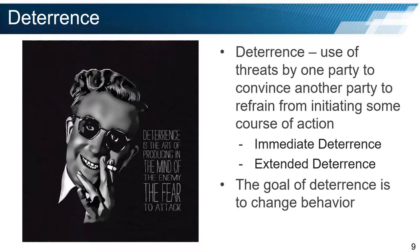A policy of deterrence can fit into two broad categories. One, preventing an armed attack against a state's own territory, known as direct deterrence. Or two, preventing an armed attack against another state, known as extended deterrence. Situations of direct deterrence often occur when there is a territorial dispute between neighboring states in which major powers like the United States do not directly intervene. On the other hand, situations of extended deterrence often occur when a great power becomes involved. The overall goal of deterrence is to change behavior.